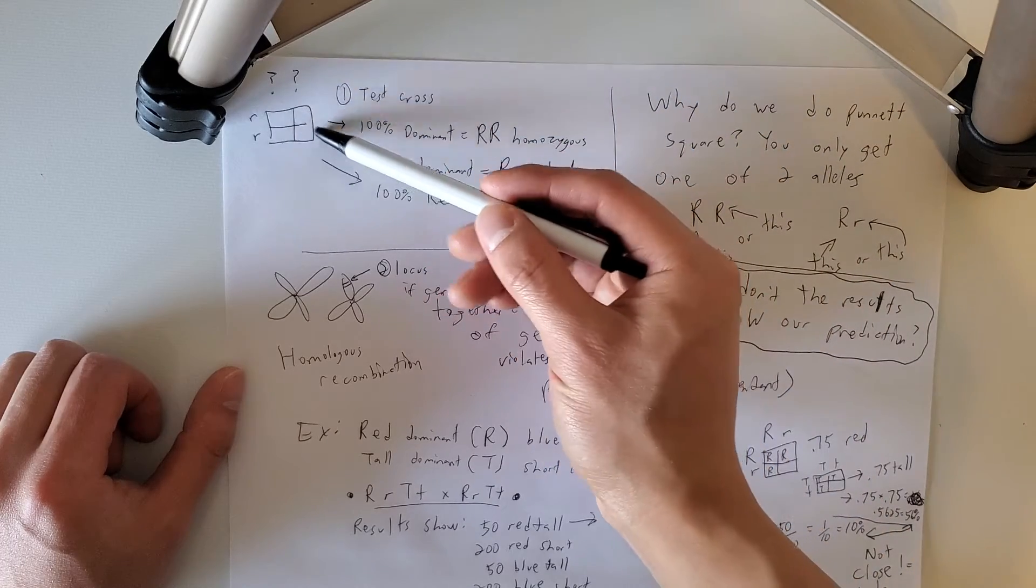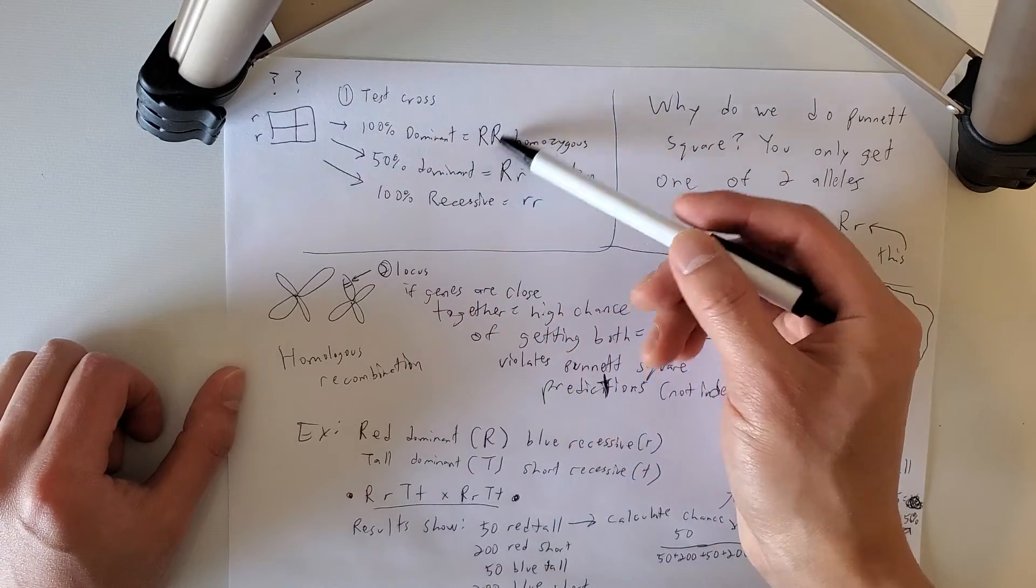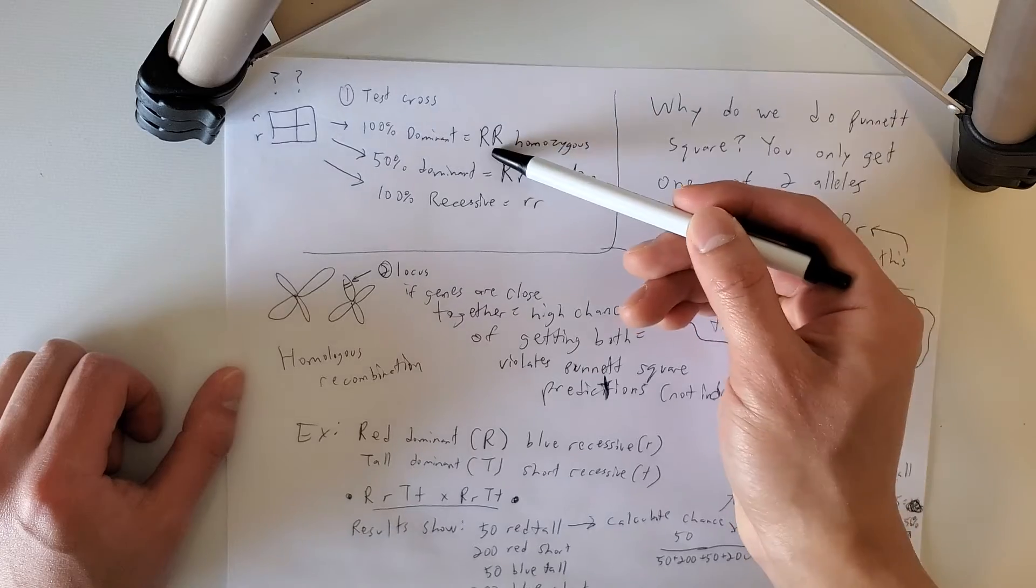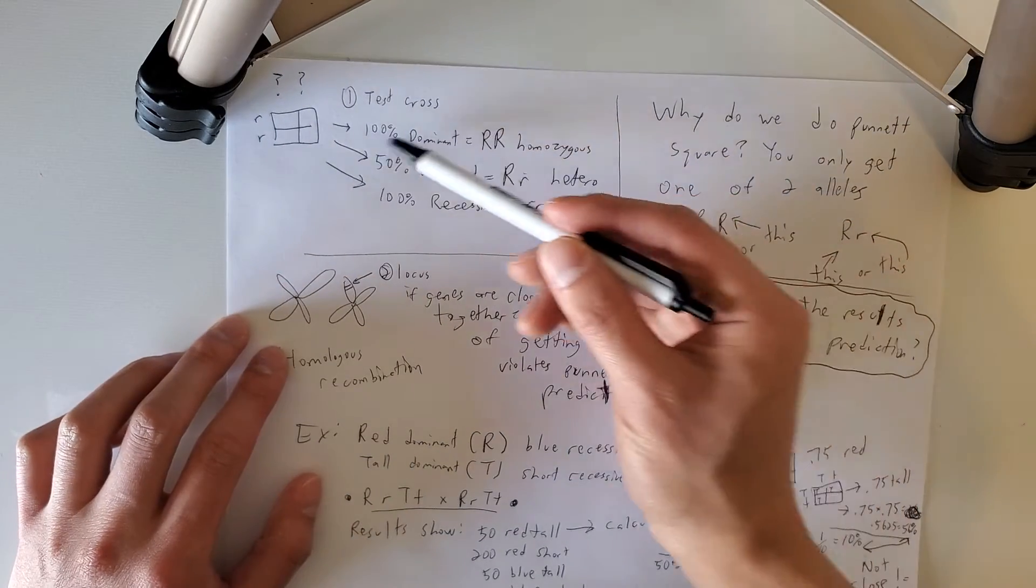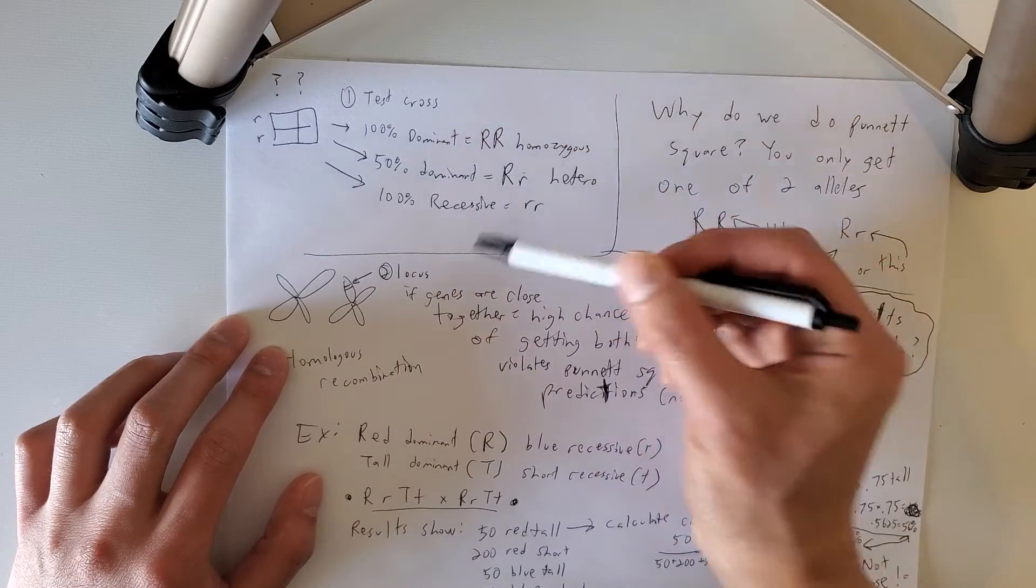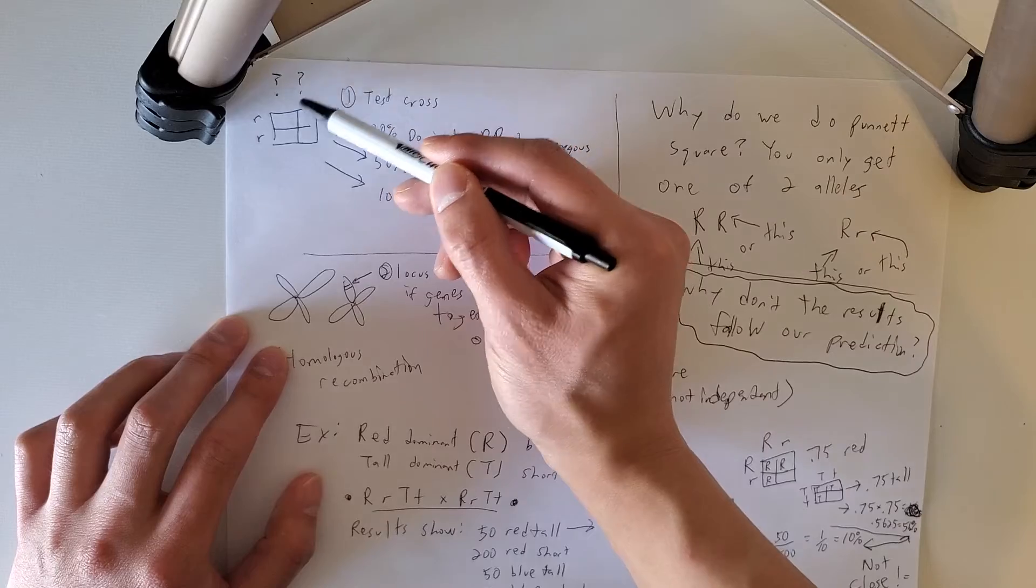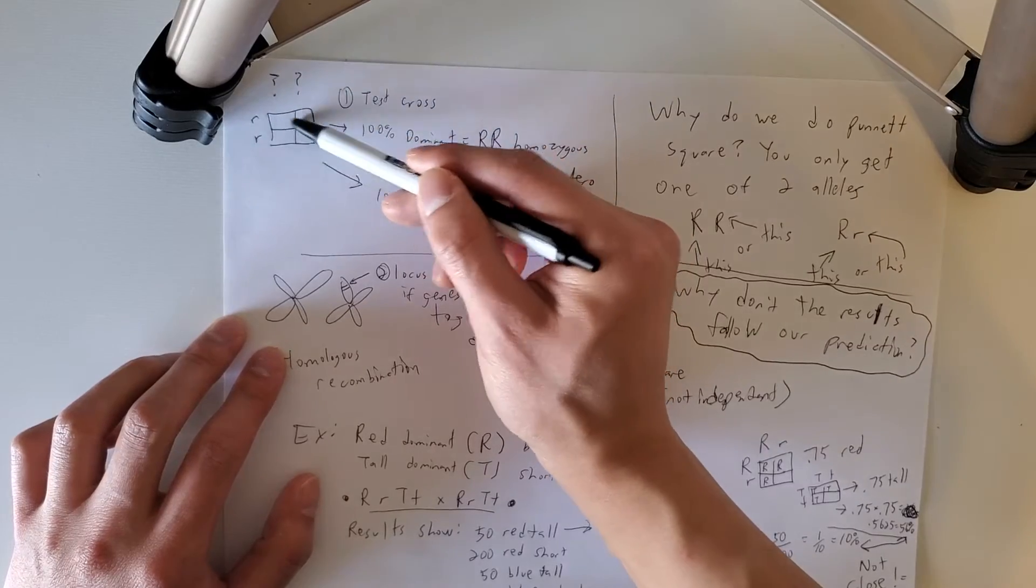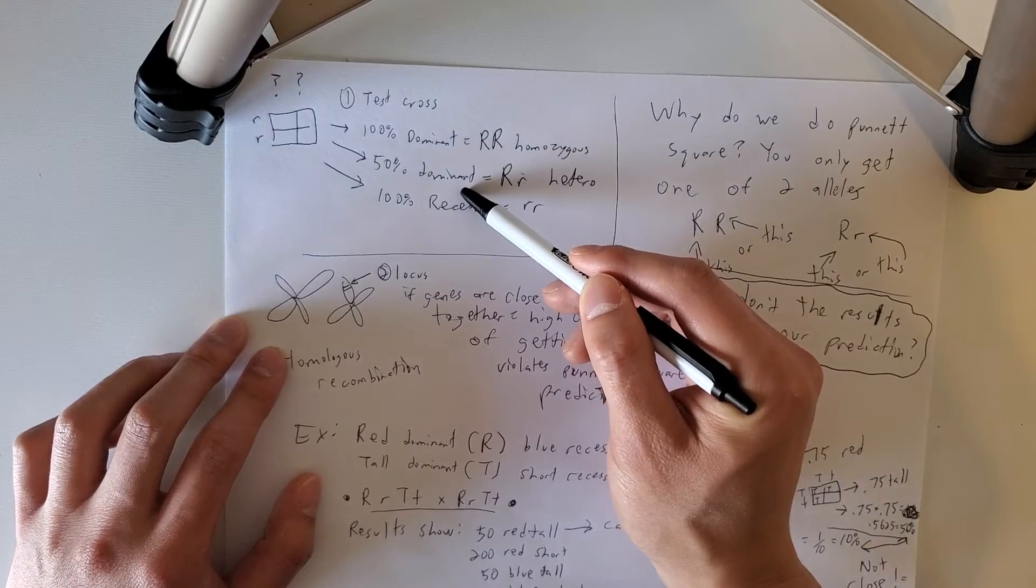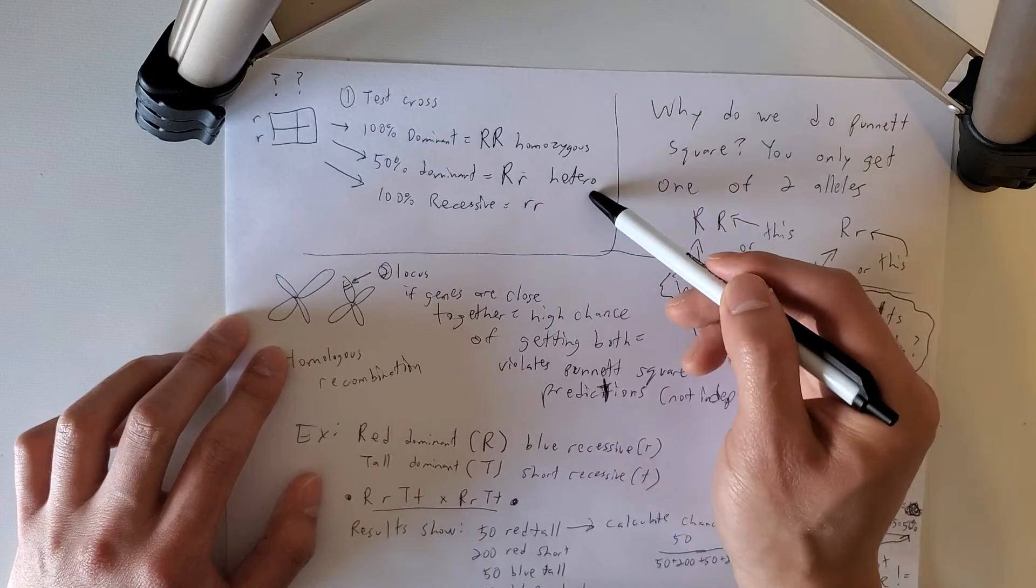Then you're going to count the percentage of the offspring. If the offspring is 100% dominant, then that tells you this unknown parent has to be homozygous dominant. Because the only way all the offspring would be 100% the dominant trait is if the parent had both dominant alleles, meaning that all four boxes would have a dominant allele. If the children is 50% dominant, so only half of them is dominant, the other half is not, then this unknown parent is hetero.